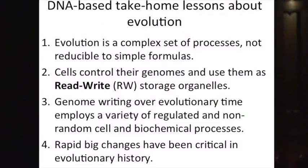The fourth point is that there have been a number of rapid, big changes that came at critical points in evolutionary history. We don't yet understand the full implications of these big changes, but from reading the DNA genome sequence record we can tell that they've occurred, and we know something about similar processes observable in real time that need to be studied more intensively.